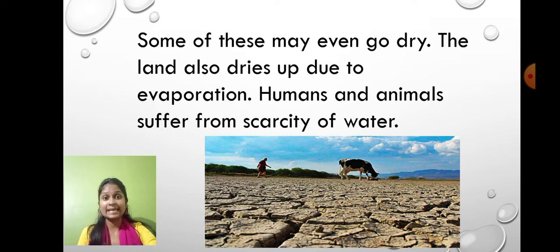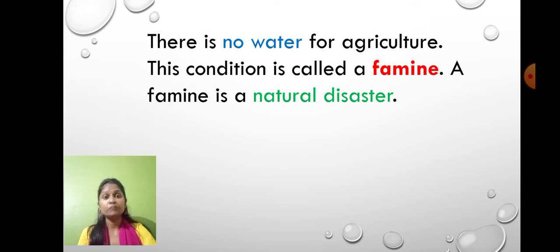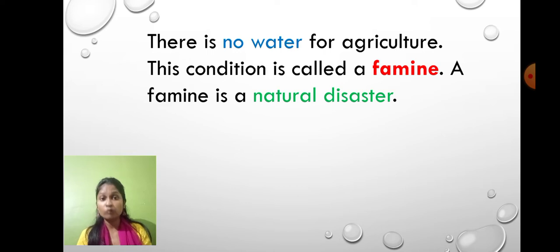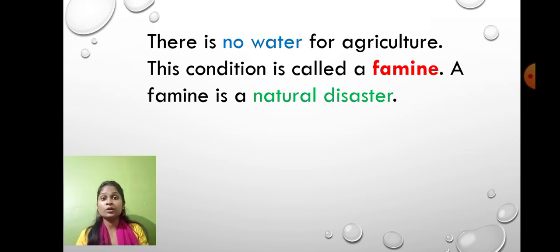Because of drought, water scarcity is created, and there is no water for agriculture. When there is no water for agriculture, farmers cannot grow crops — crop production is not possible without water. If there is no crop production, there will be a deficiency of food. When there is a deficiency of food and many people may die because of hunger, that condition is called famine.